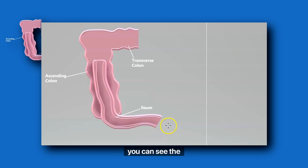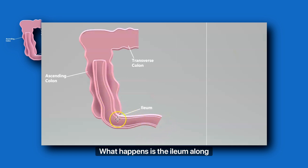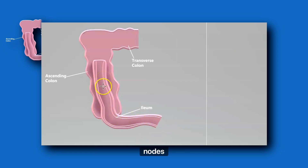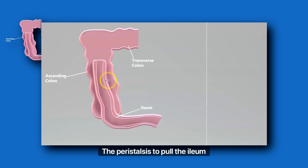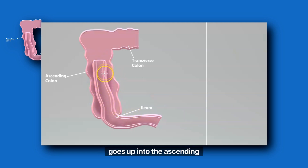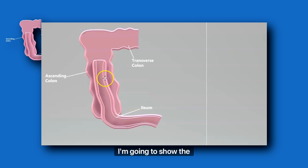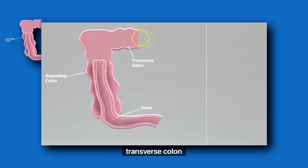Here in this diagram, you can see the ileum. What happens is the ileum, along with the lymph nodes or the mass that's causing the peristalsis to pull the ileum up into the colon, goes up into the ascending colon. In the case I'm going to show, the ileum went all the way into the transverse colon.